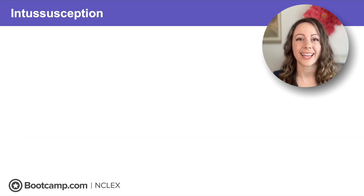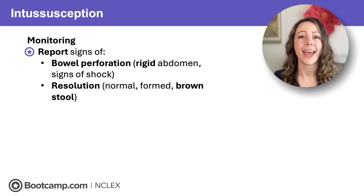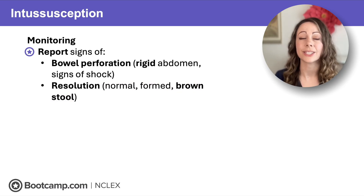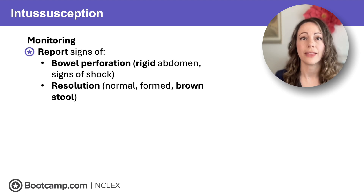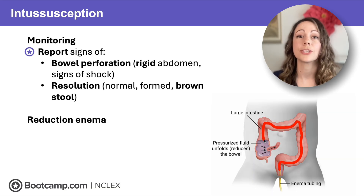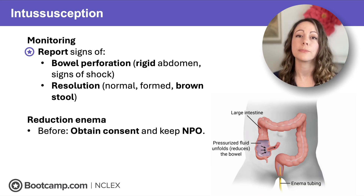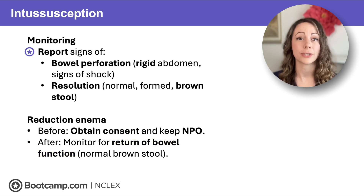We need to monitor for signs of bowel perforation — that major complication — like a rigid abdomen or signs of shock such as hypotension and pallor. NCLEX tip: also report a normal formed brown stool, because this indicates resolution — the intussusception has unfolded — and the provider needs to know to change the plan of care. A reduction enema uses pressurized air or fluid to unfold the bowel. Before the procedure, obtain consent and keep them NPO in case they need bowel surgery. Afterwards, monitor for return of bowel function — that normal brown stool indicates success.